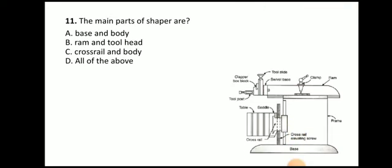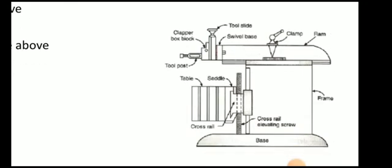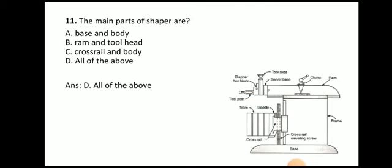Next question: the main parts of the shaper are base and body, ram and tool head, cross rail and body — the answer is all of the above. Base, body, ram, tool head, cross rail, and body are the main parts of the shaper machine. Here you can see the base, frame, ram, table, saddle, and tool post — all are important parts of the shaper machine.